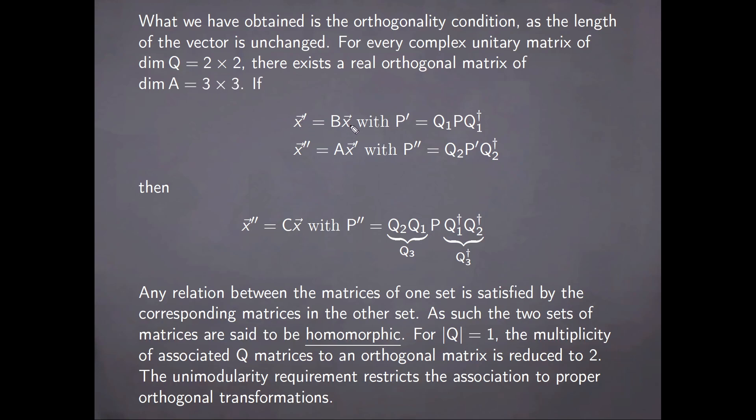And it follows that if we were to go from the vector x to x prime through the orthogonal transformation beta, to which there corresponds the similarity transformation of P to P prime through Q1, and if we were then to transform further from x prime to x double-prime through the orthogonal matrix A, to which we can associate the similarity transformation from P prime to P double-prime through the matrix Q2, then if we were to simply undergo the direct transformation from x to x double-prime through an orthogonal matrix C, then P double-prime should transform from P through a similarity transformation involving the matrix Q3, which is given by the product between Q2 and Q1.